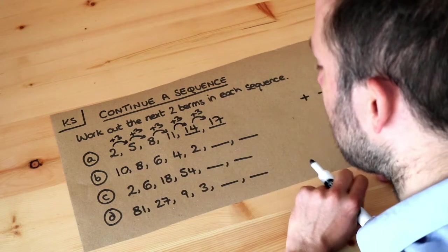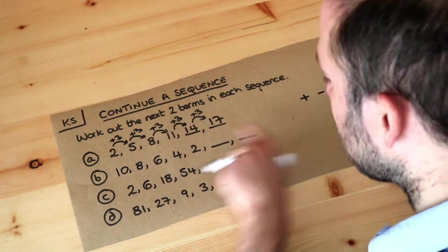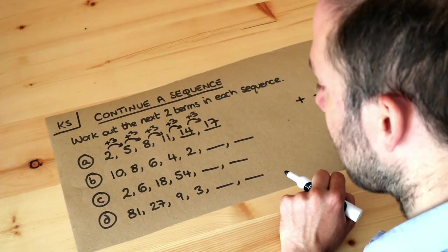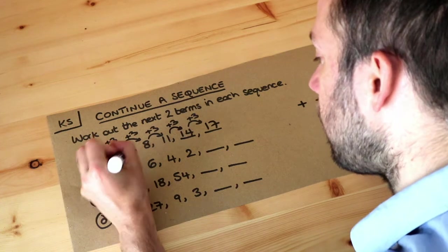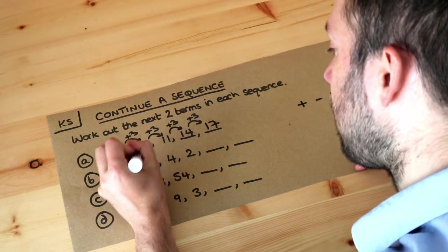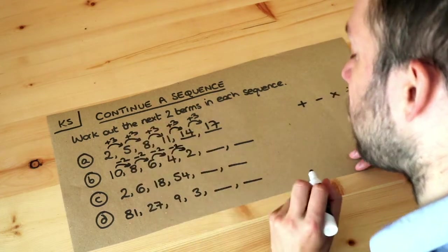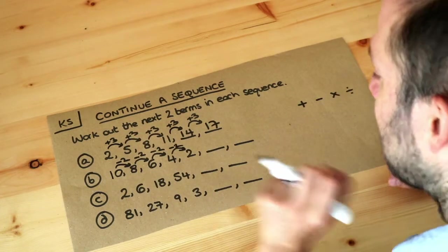What seems to be happening to the numbers? Are we adding something each time? Well no because the numbers are not getting bigger. Could we be subtracting something each time? Oh well that's going down by 2 and then that's going down by 2. That's going down by 2. They seem to be going down by 2 each time. So we continue in that same pattern.